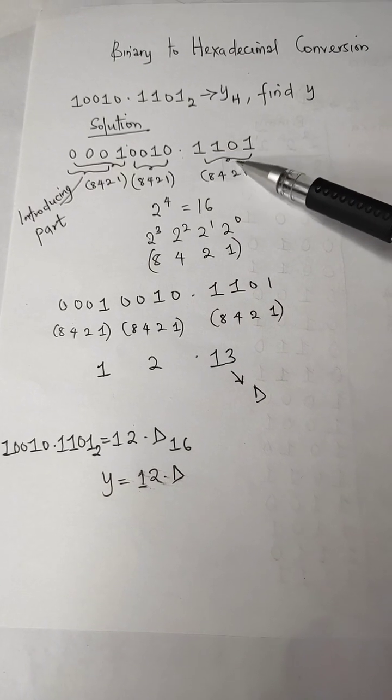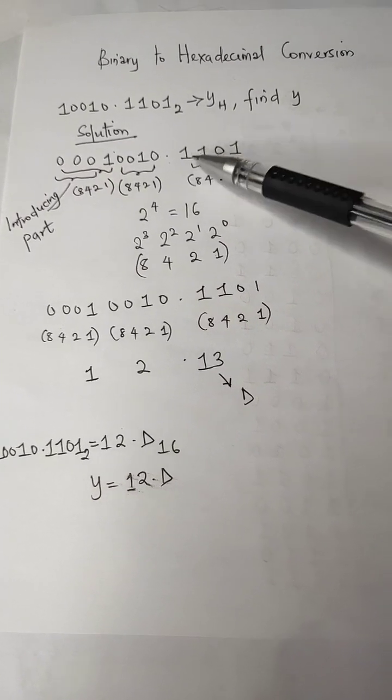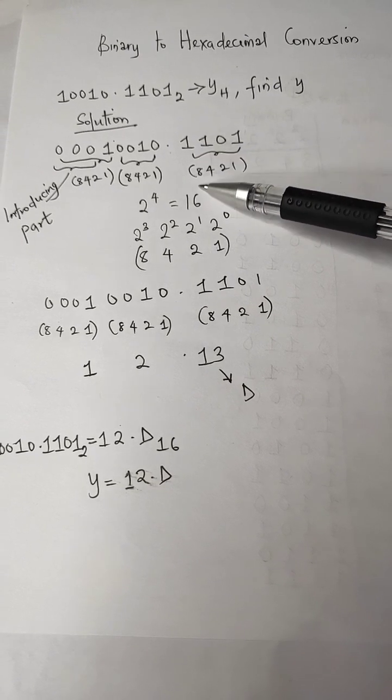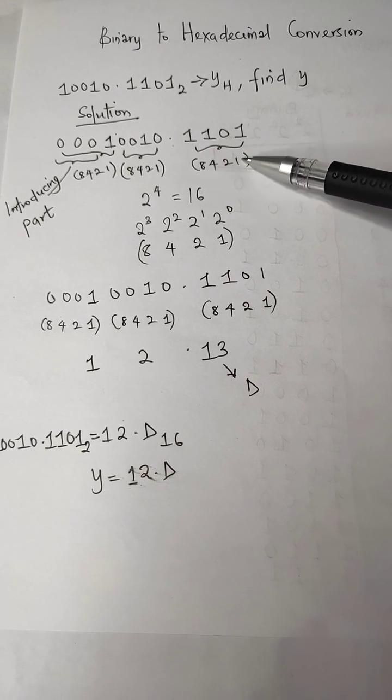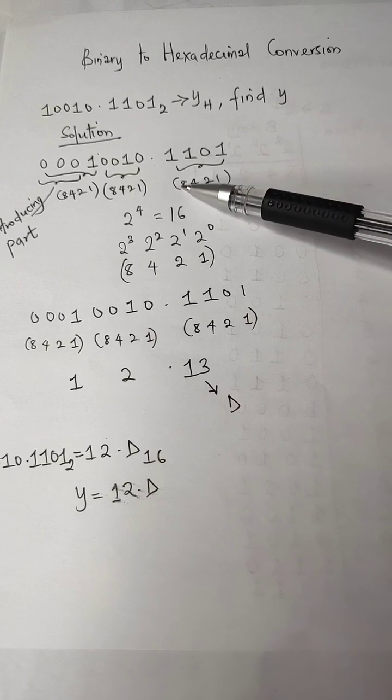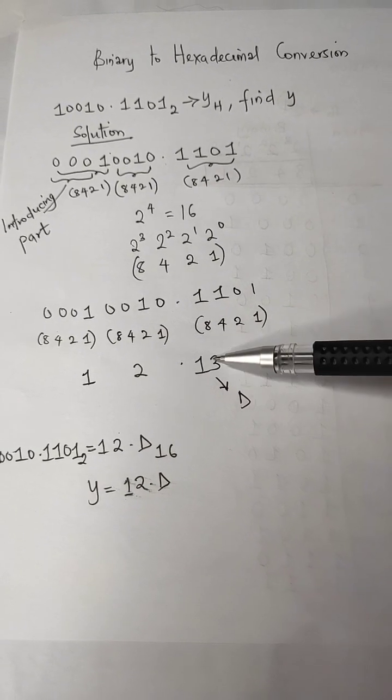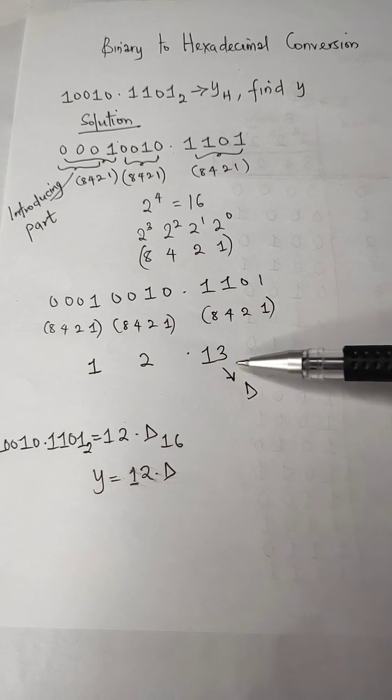So we are going to put 8, 4, 2, 1 in this case. Now whichever one is corresponding to this value, we are going to sum it up here. So we have 8 plus 4 plus 1, which gives us 13, and 13 in hexadecimal is D.